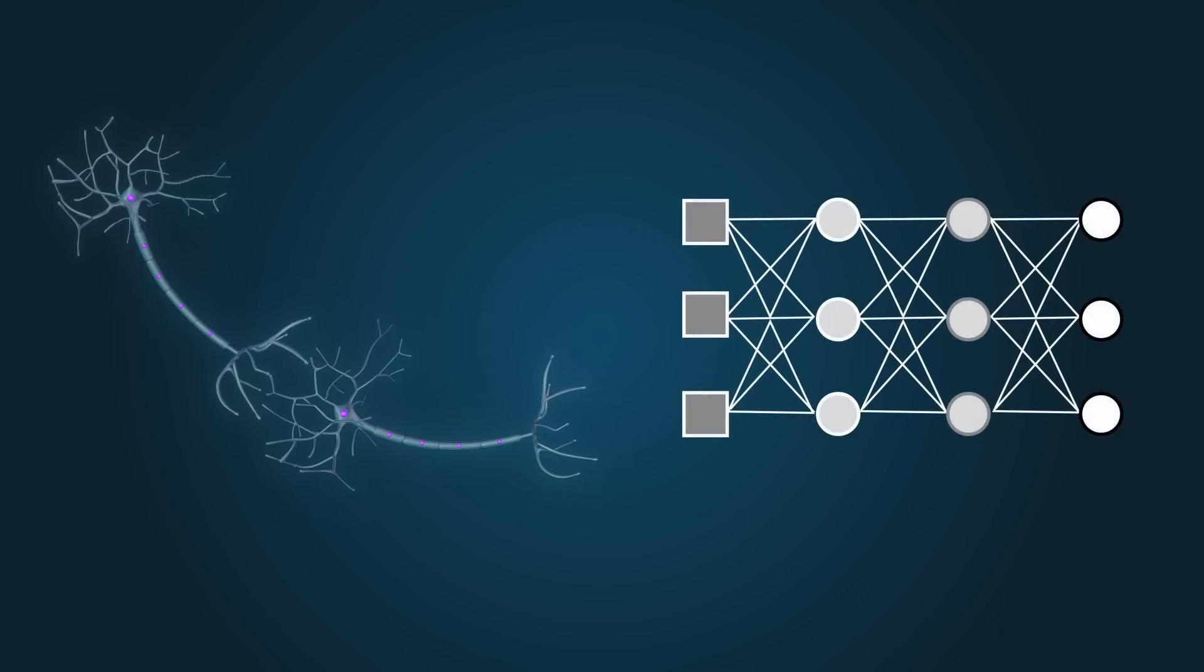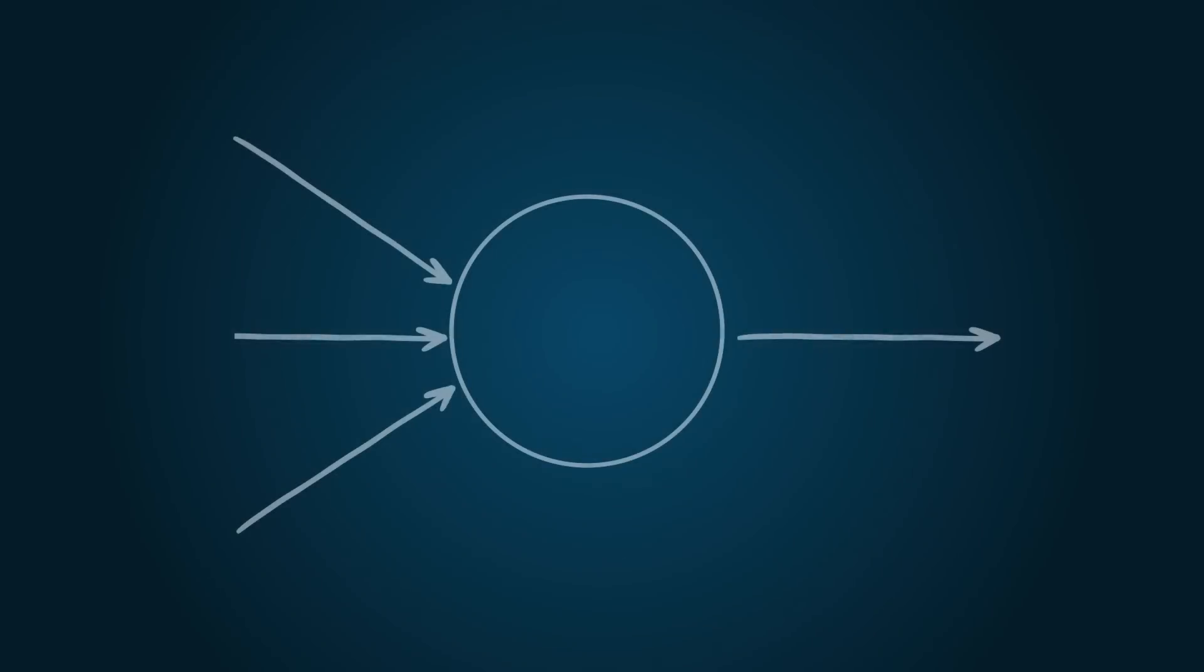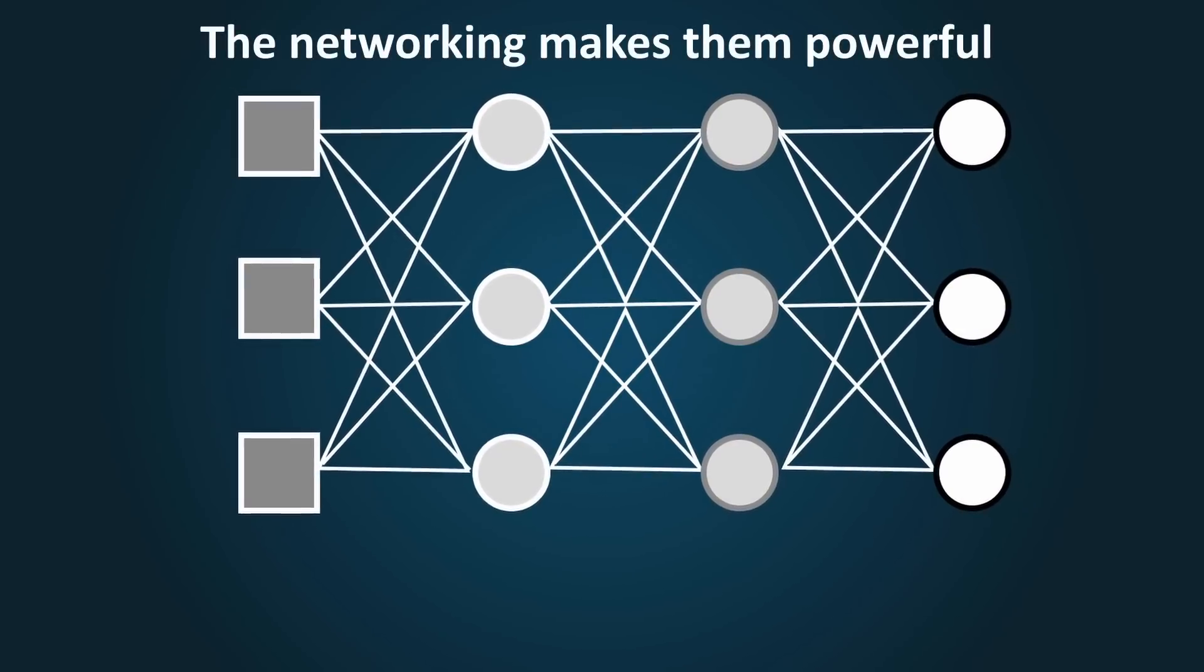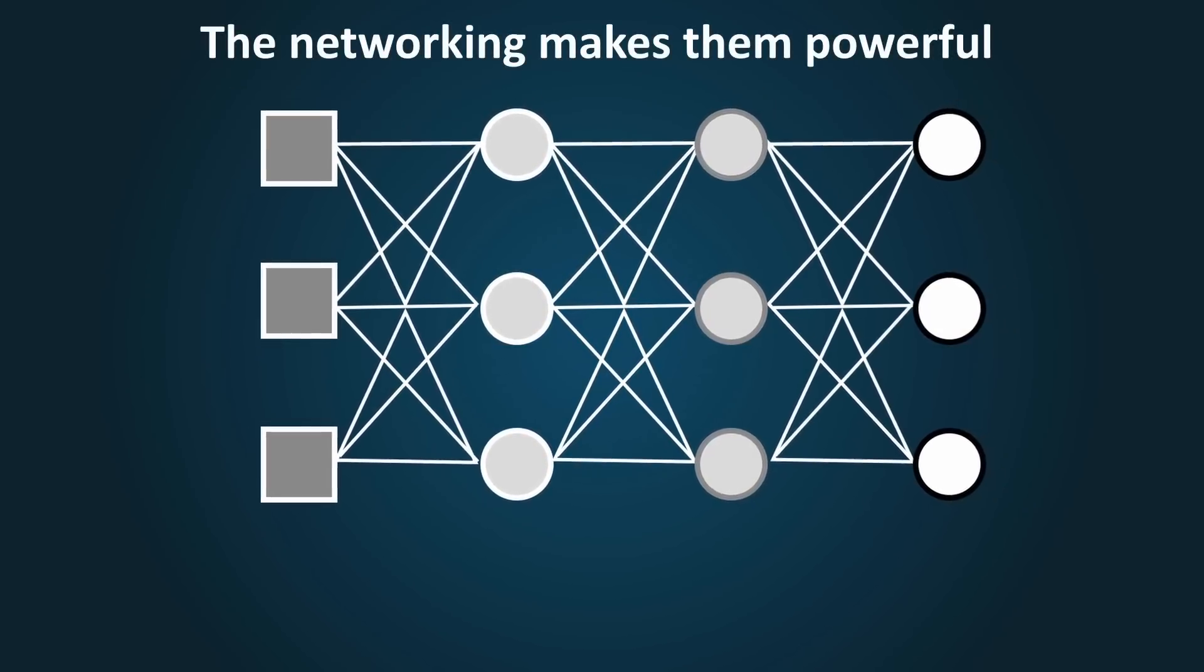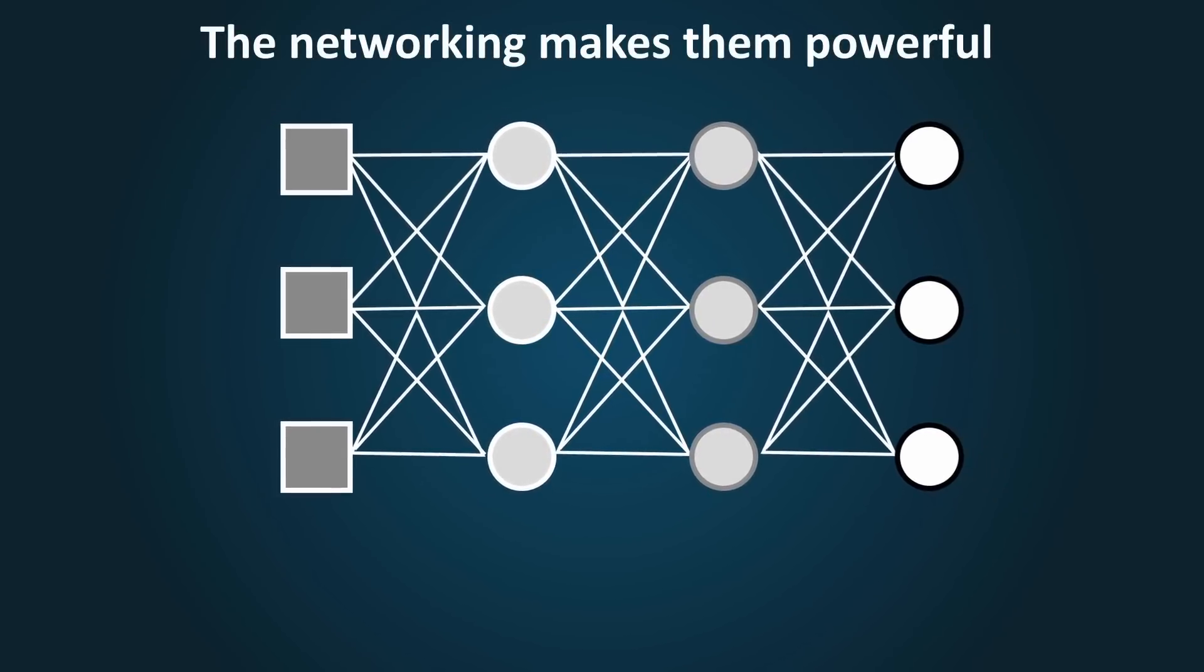Like neurons in the brain, artificial neurons can also be connected to each other via synapses. This is what a neural network is. It's neurons connected with each other, receiving inputs and passing along outputs in a complex network. While an individual neuron can be simple and might not do anything too impressive, it's the networking that makes them so powerful. And that network is the core of artificial intelligence systems.